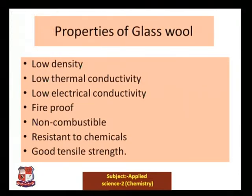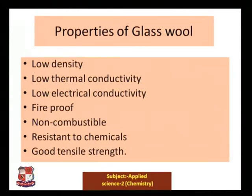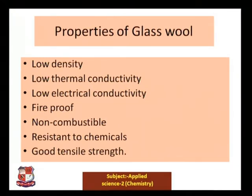Looking at glass wool as an example: just like wool filaments, glass has an appearance similar to wool filaments, hence the name glass wool. Properties of glass wool include low density, low thermal conductivity, low electrical conductivity, and it is fireproof — a non-combustible material. Glass wool is also resistant to chemicals and possesses good tensile strength, which enables its applications in different fields.